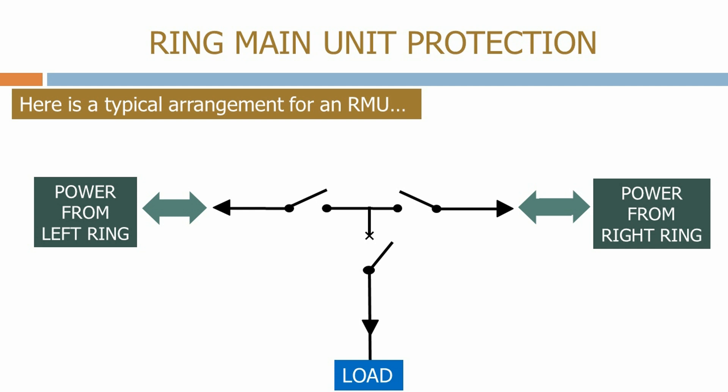The ring main unit is also equipped with some manual ground switches. Using these we can separately ground the left hand ring, the right hand ring, and the feeder. Before we ground any part of the ring, this has to be done under the direct control of the network operator to make sure that the ground switches are not closed onto a live circuit.